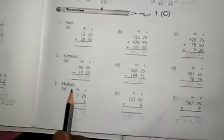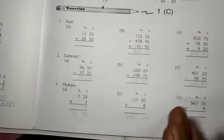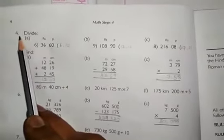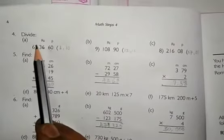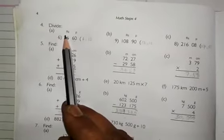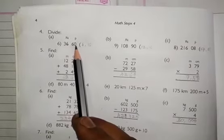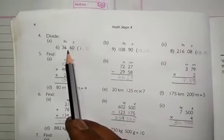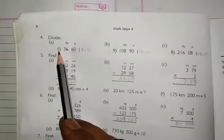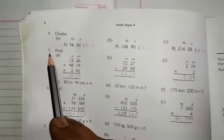Number 3. Multiply. You multiply A, B, C in your copy. Question number 4. Divide. Here have rupees and paise. 36 rupees and 60 paise. This number 6. You do it. A, B, C.